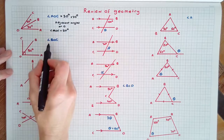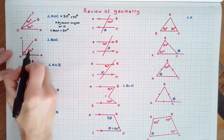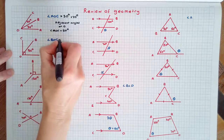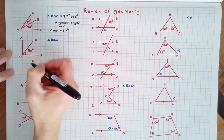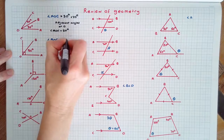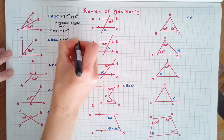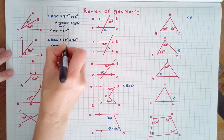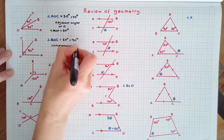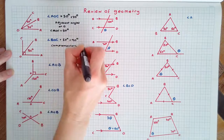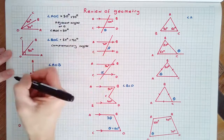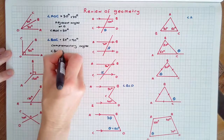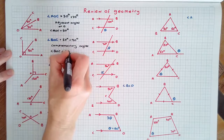Complementary angles add to 90 degrees. Angle BOC plus 50 degrees will therefore equal 90 degrees because they're complementary angles. Therefore angle BOC is equal to 40 degrees.